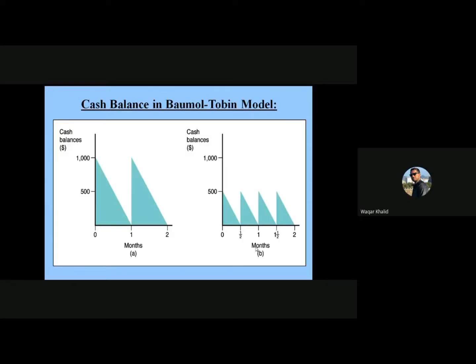In the Tobin model, look at Figure A. Suppose an individual has a cash balance in dollars. At the start of the month he has $1,000, and he is using this amount only for transaction purposes. He spends this amount at a constant rate day by day, and at the end of the month he has zero balance.